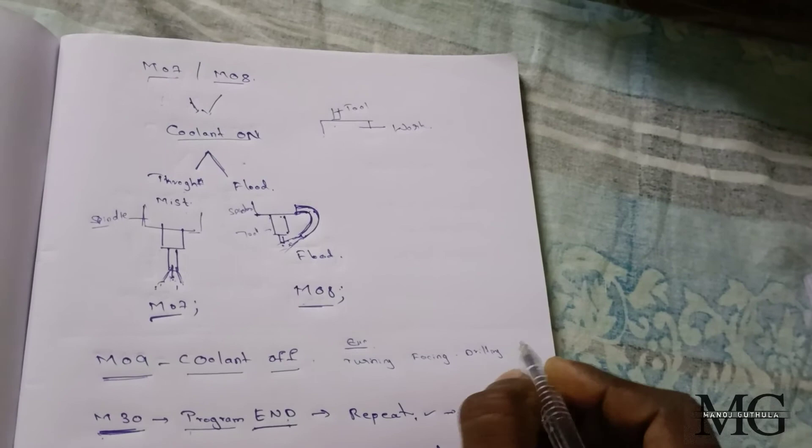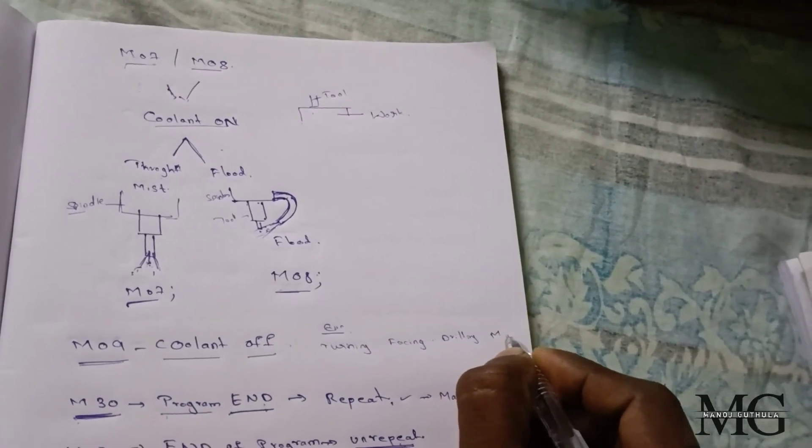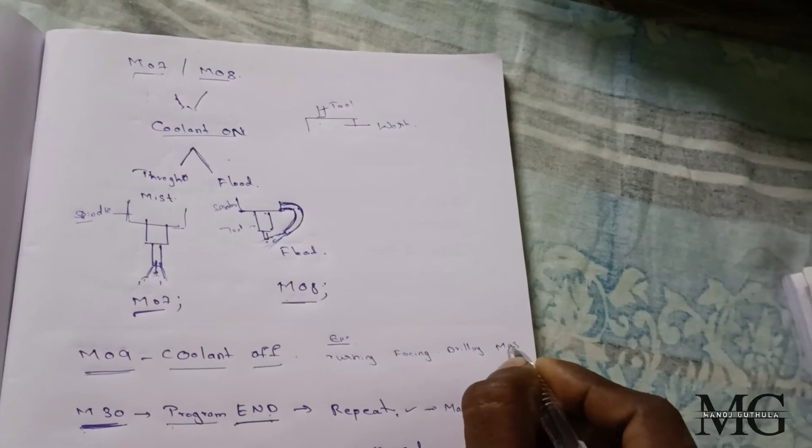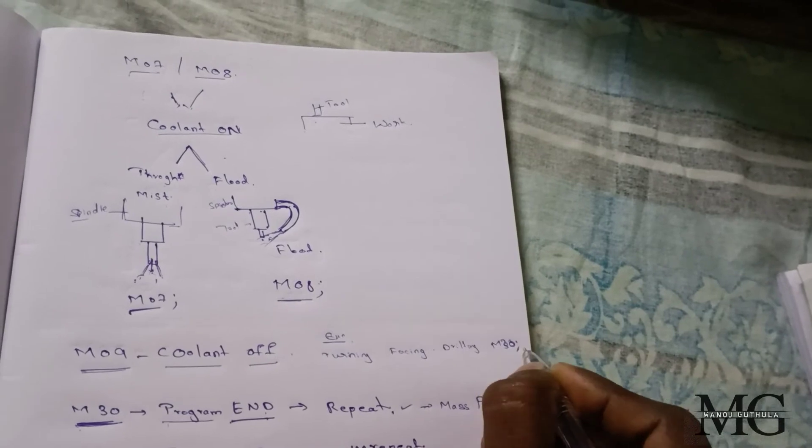After completion of all three operations, we use M30. Because it ends up to there.